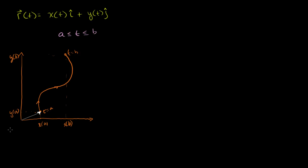What I want to do is think about what is the difference between two points. Let's say that right there is r of some particular t. And let's say we increase t by a little bit, by h. So r of t plus h — if we view the parameter t as time, we've moved forward in time by some amount, so our little particle has moved a little bit. That right there in yellow is r of t plus h.